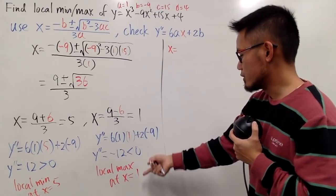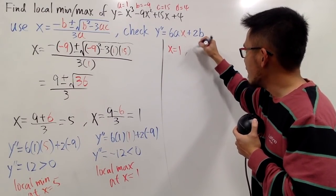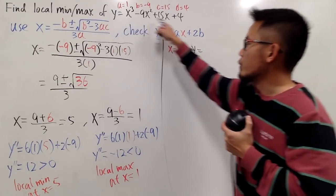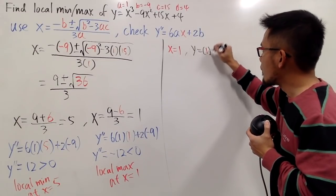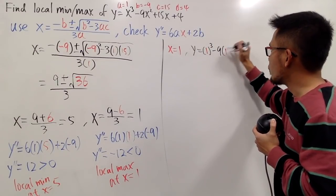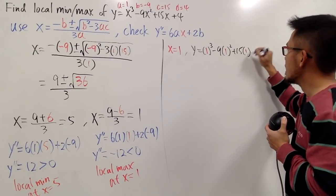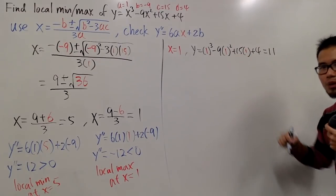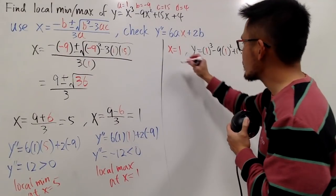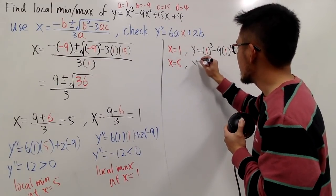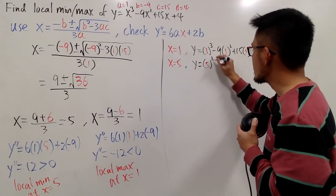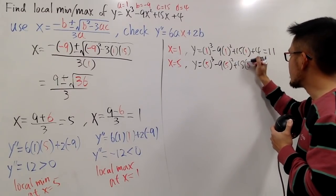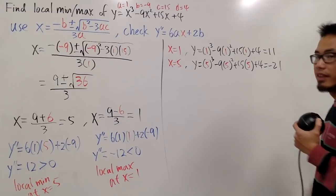When X is equal to 1 first, we know Y would be, well, I want to get the Y value, so I'll plug in 1 into the original equation. Therefore, we'll get 1 to the third power minus 9 times 1 squared plus 15 times 1 plus 4. And this is going to give us positive 11, once you do the computation. And then on the other hand, when X is equal to 5, let's plug that in for Y. Y would be 5 to the third power minus 9 times 5 squared plus 15 times 5 plus 4. This is going to give us negative 21.